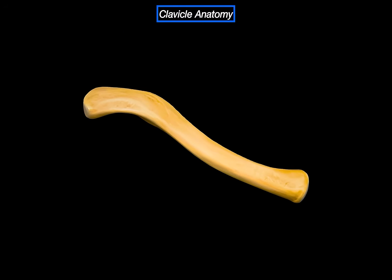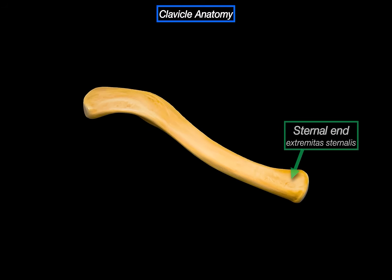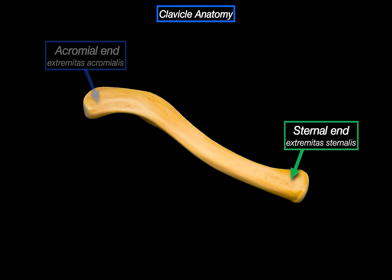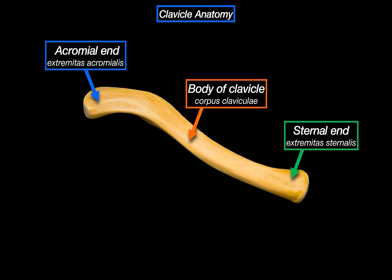The clavicle has three basic parts. First, we have the sternal end — it's the medial part, thicker and rounded, and it connects to the sternum. Then on the lateral side, we've got the acromial end. It's flatter and broader, and this is the part that meets the scapula at the acromium. And in between these two, there's the body of the clavicle — a long, curved shaft.